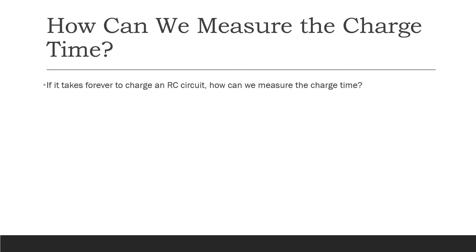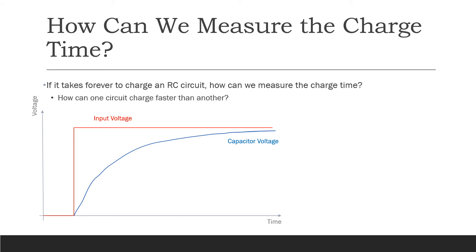So if it takes forever for an RC circuit to fully charge, how can we measure the charge time? We can't measure how long it takes to fully charge, but we can measure how long it takes to charge up to a certain percentage of the input voltage. In particular, we're interested in how long it takes to charge to 63.2% of the final value. That amount of time is called tau.